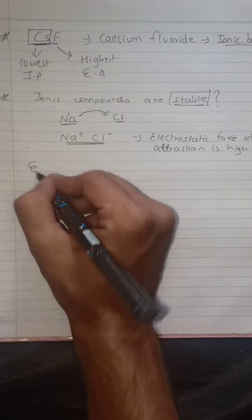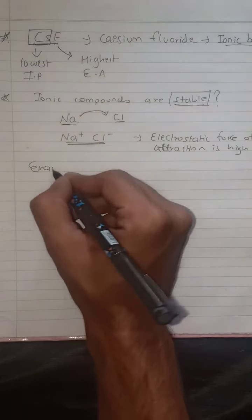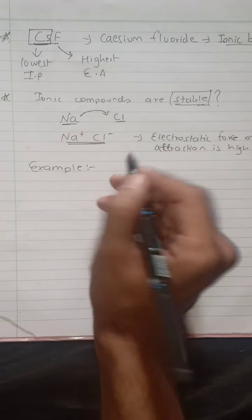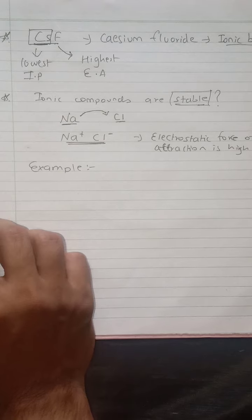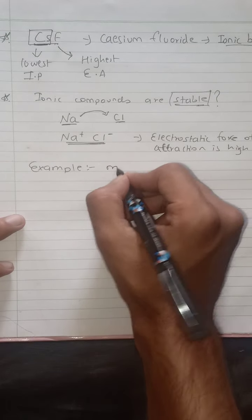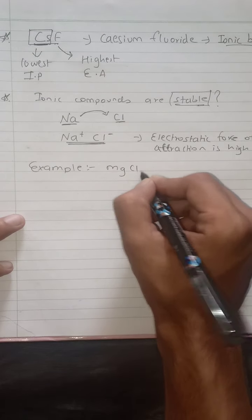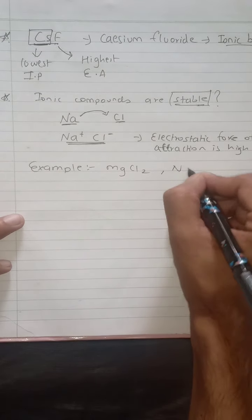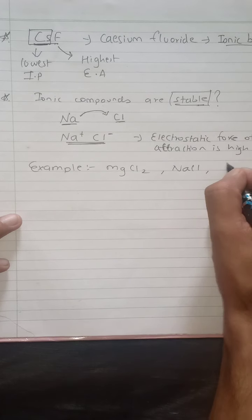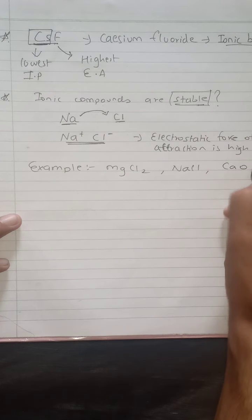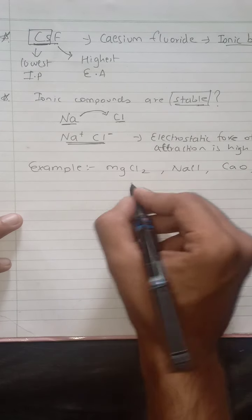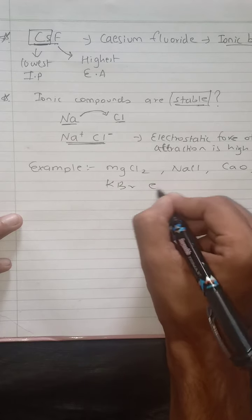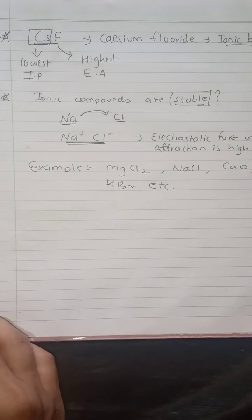Some examples of ionic compounds: you can write any compound — NaCl, MgCl2, calcium oxide, KBr, etc. There are many examples.